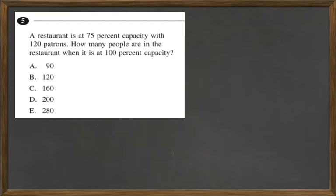There are several ways you can tackle this, but I will use the proportion method. So let's go 75%. Well, that equals 120 patrons.